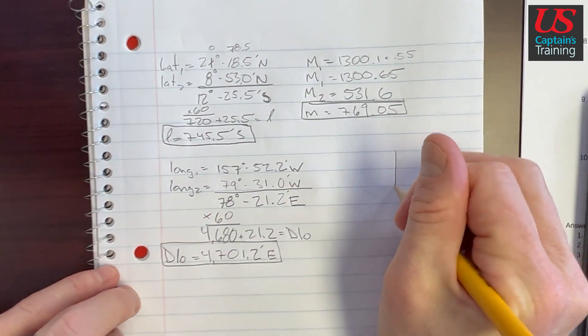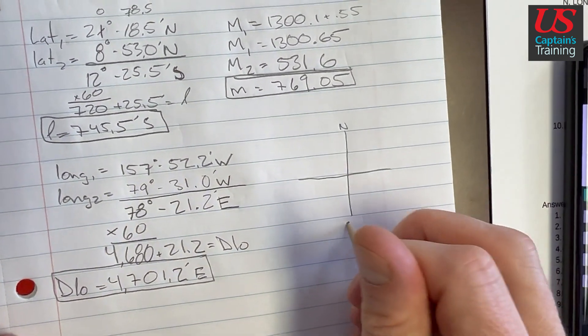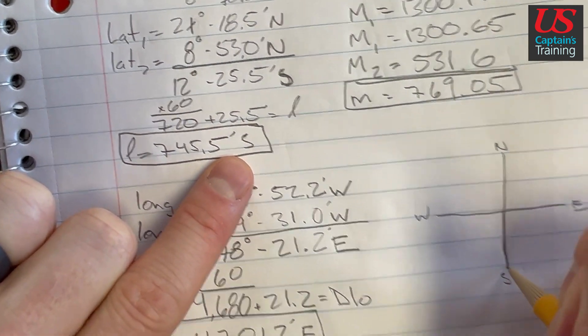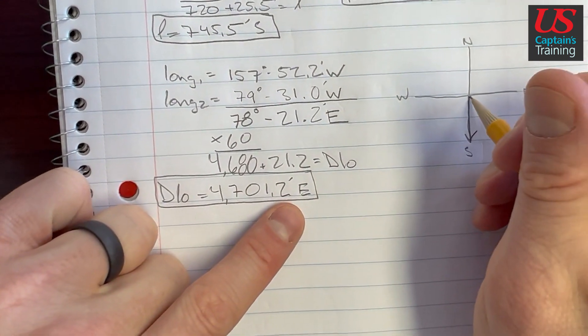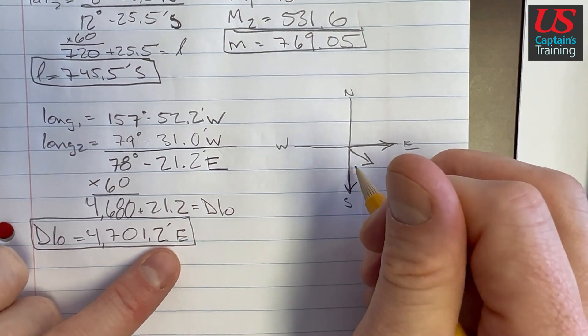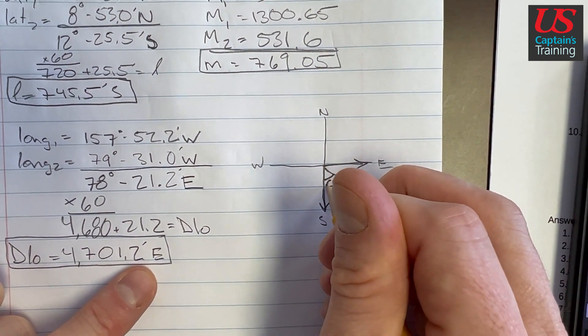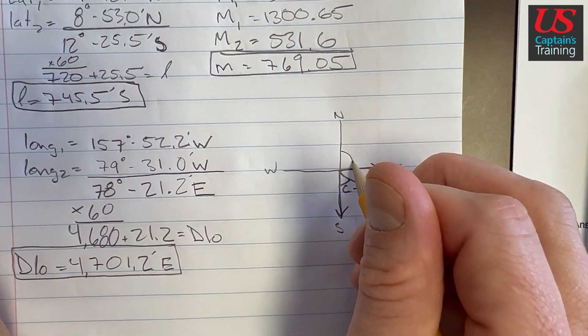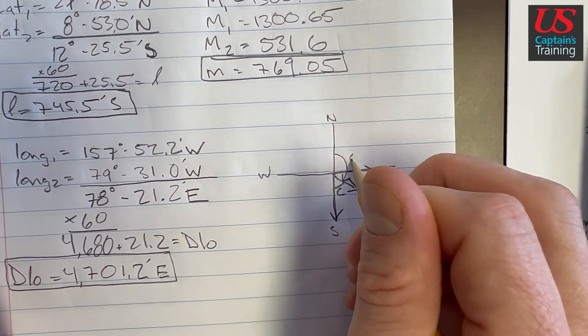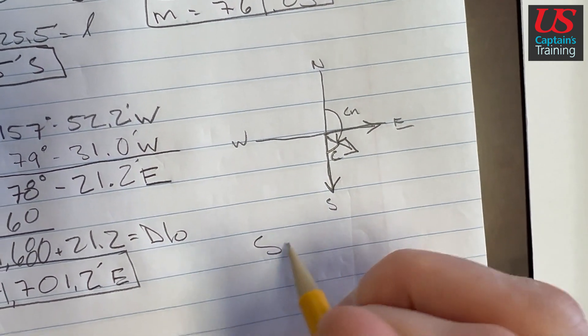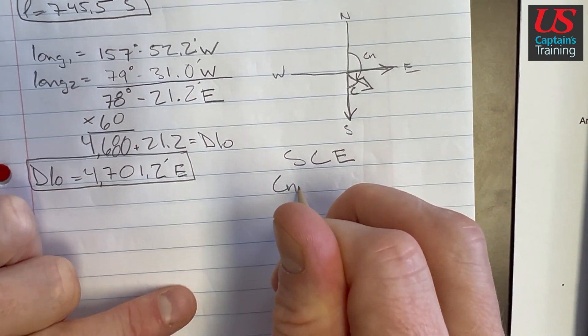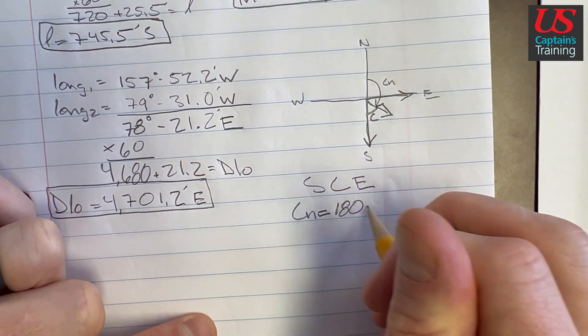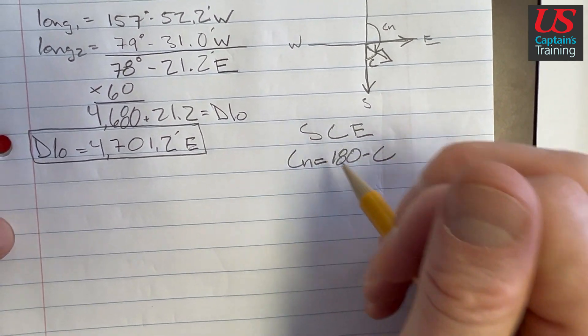So let's figure out our quadrantal notation. We got north, south, east, west, and our L we went south. So we headed south and we headed to the east, so we're over here. Our course is going to be here. So our C, when we calculate C, C is going to be here. And when we calculate C_N for the answer, C_N is going to be from north. So from north to our course, this is going to be C_N. So we're going to be south course east. So our C_N is going to be equal to 180 minus C, 180 minus our course. So we'll figure out our course now so we can get the C_N.